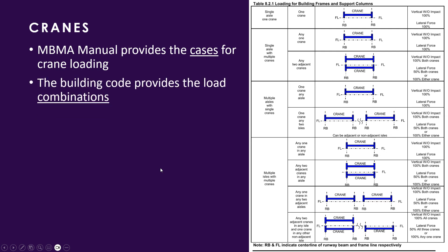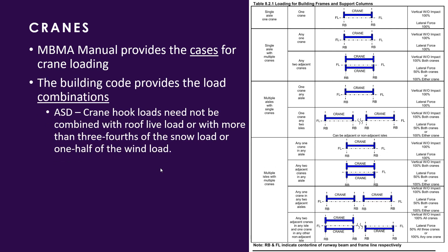The building code provides the load combinations, which is interesting because if you read the LRFD combos, they don't really touch it. They don't really tell you what to do for cranes. But in the ASD, they talk about you don't have to combine crane loads with roof live load or with more than three quarters of the snow load or one half of the wind load. So you're not taking full crane full snow. You're taking portions of that. So if you're going to come up with your own combinations for LRFD, it kind of has to be in line here. But the code is not explicit when it comes to LRFD combinations.